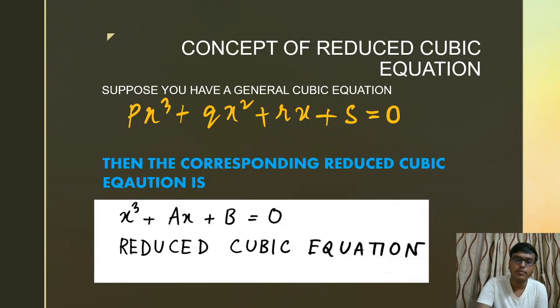Now if I compare this particular equation that I have shown you with this particular equation x³ + ax + b = 0, let's see where it takes us.